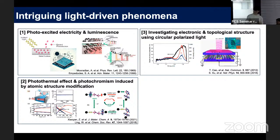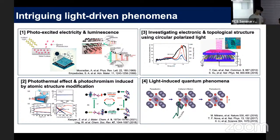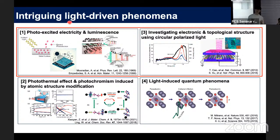Using circularly polarized light, we can probe the electronic structure or topology of materials. Moreover, we can manipulate quantum phenomena using light. For example, in a paraelectric system, when we shine terahertz light, we can convert it to a ferroelectric system, generating quantum phenomena. I focused on two topics: generating electricity using photons, and investigating materials' intrinsic properties using light.